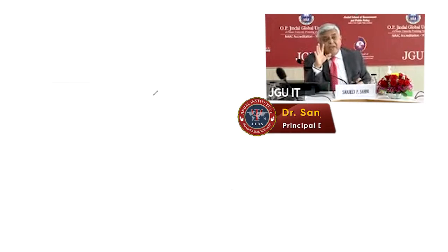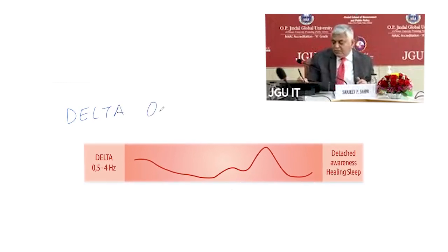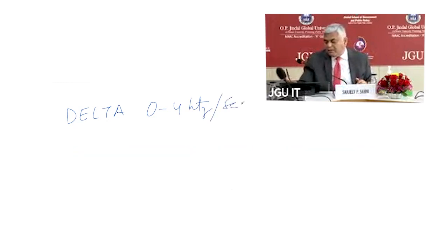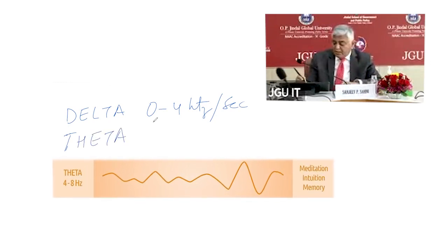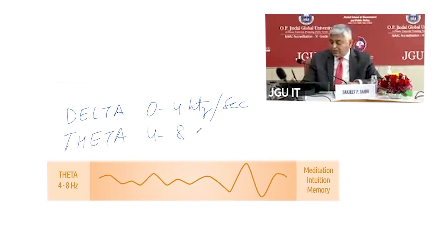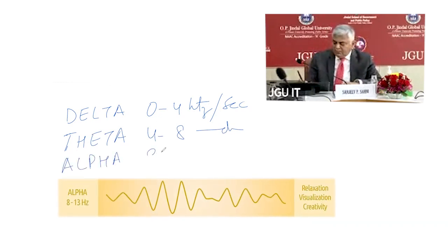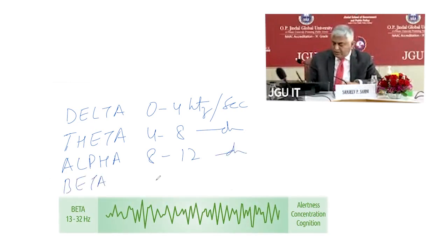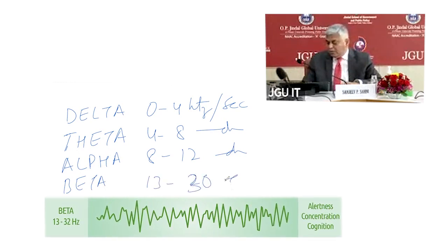There are four types of brain waves. One is called Delta, which is 0 to 4 hertz per second. The second one is Theta, which is 4 to 8 hertz. Then comes Alpha, 8 to 12 hertz, and then comes Beta, which is 13 to 30 hertz.